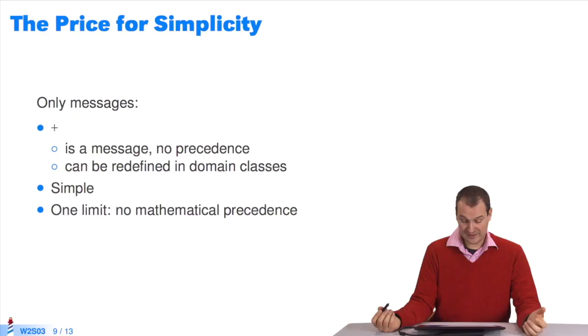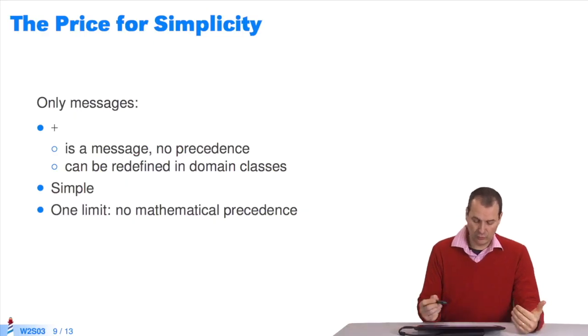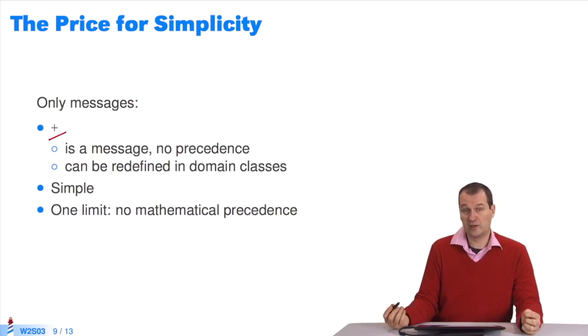I told you things were very simple in Pharo. There are only messages. Plus is a message like any other. There's no order of precedence. What's nice is that you can use plus for domain-specific languages. You can use plus between objects unrelated to mathematical objects. You can't do it in Java. You can do it in C++ by redefining operators. In Pharo, the solution was to decide plus would be like any other message. Emphasis was put on simplicity. There's a price to pay. There's no mathematical precedence.